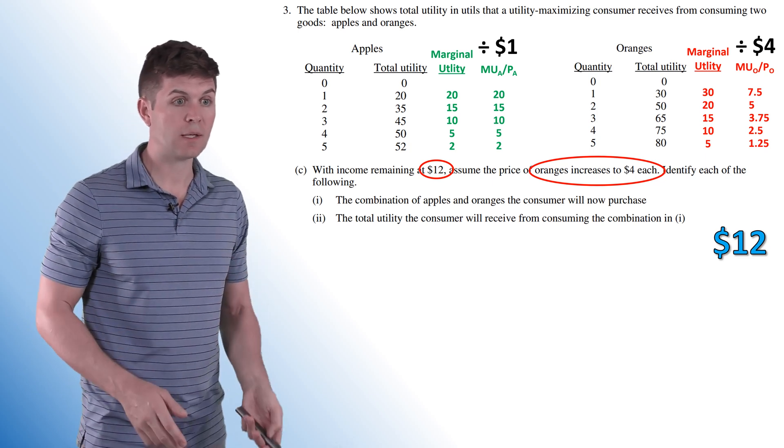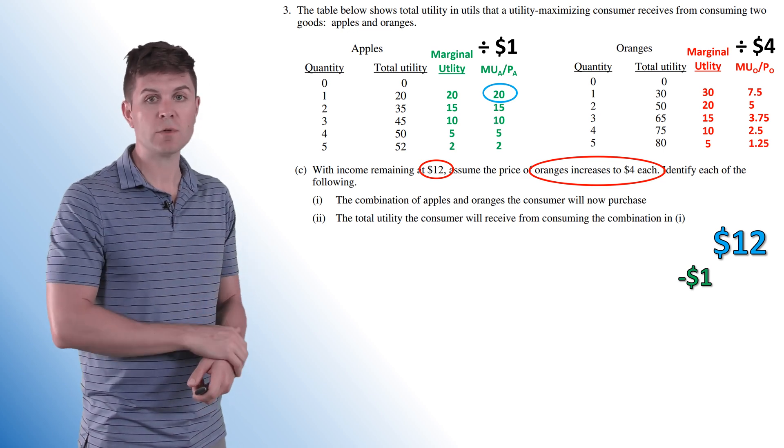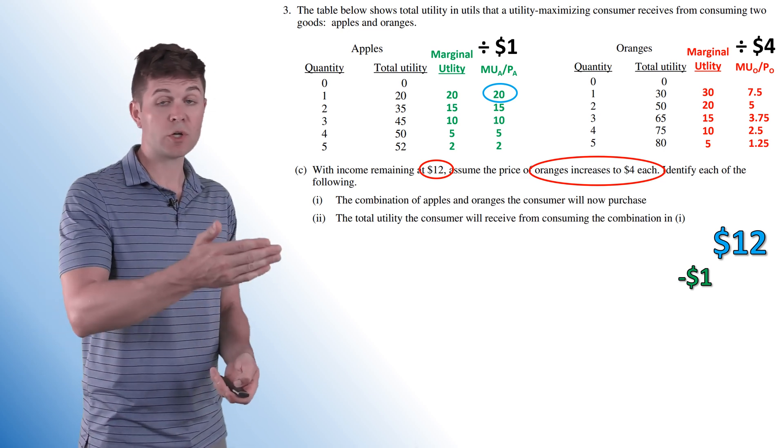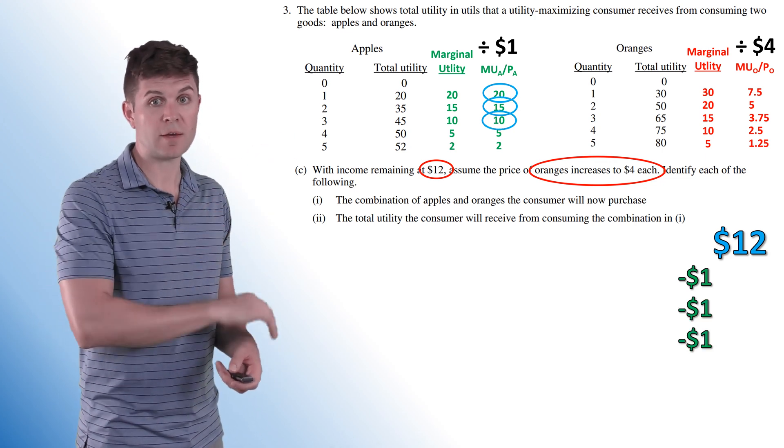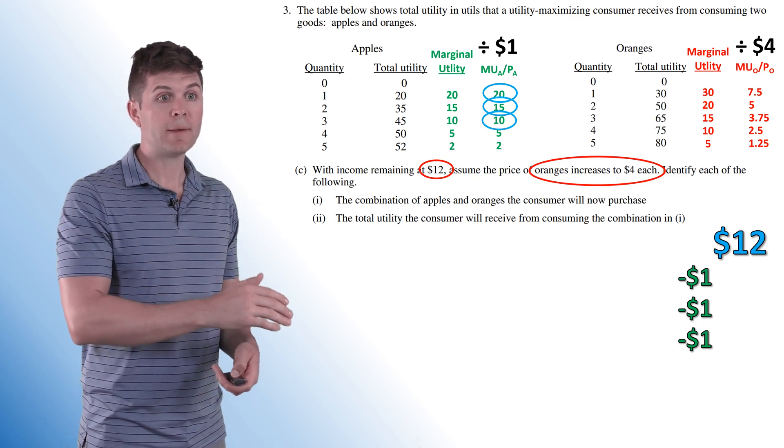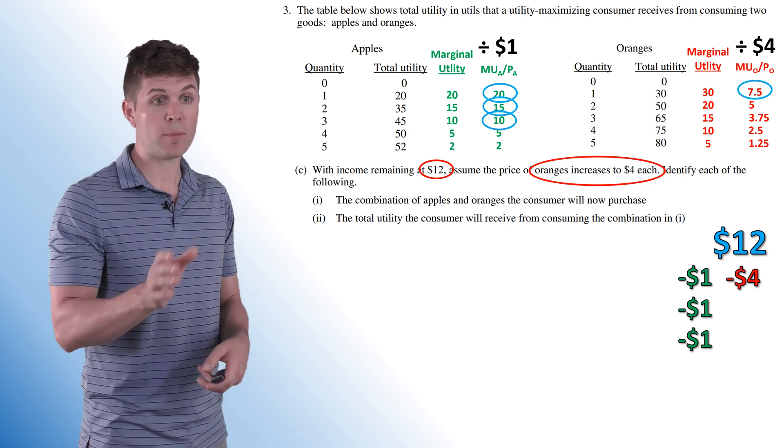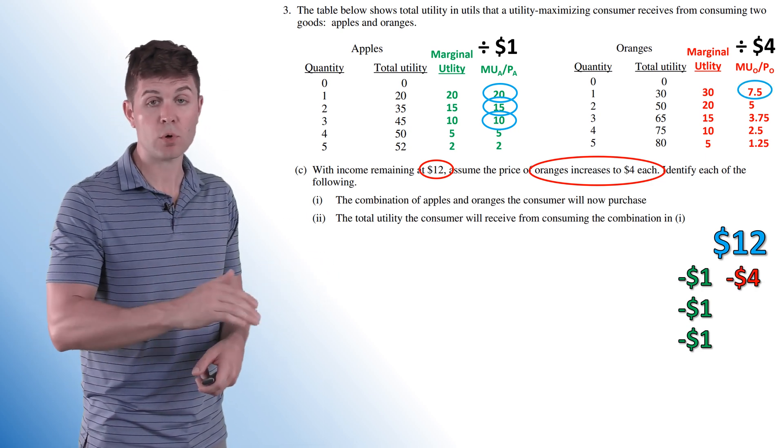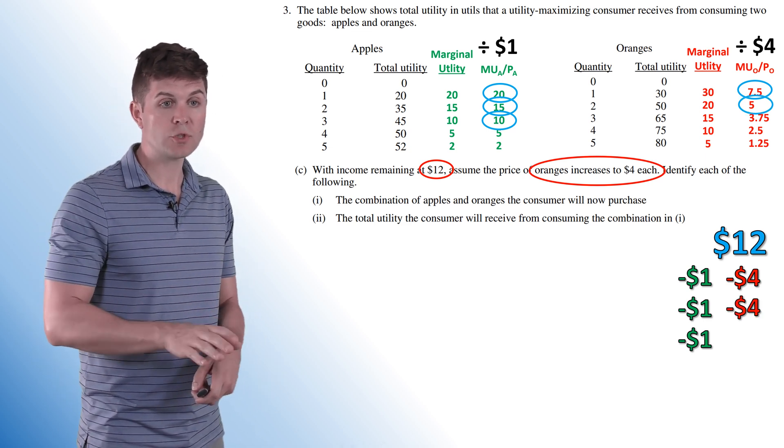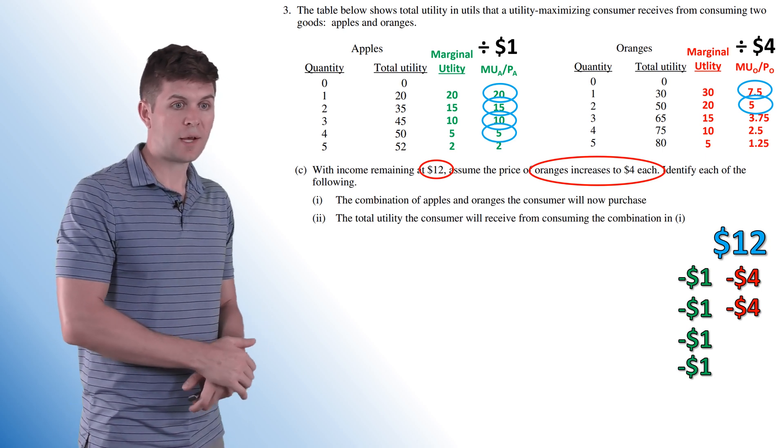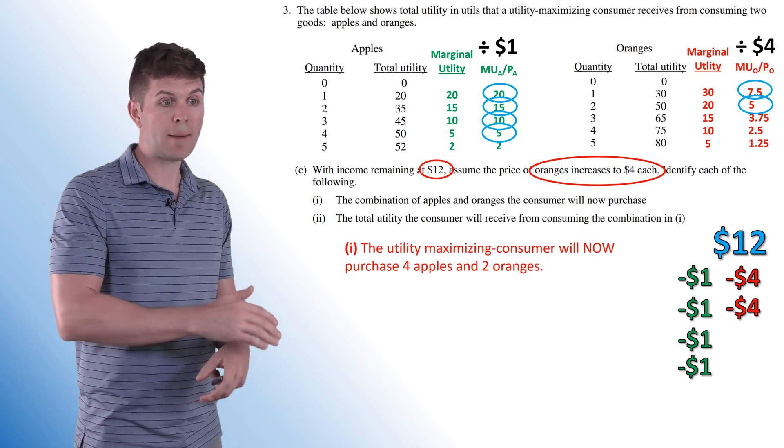So we can kind of run through the same thing. So we take our $12. The first unit we're going to buy is an apple. Gave us 20 utils of satisfaction per dollar spent. Then we're going to go buy another apple and another apple because we're not even coming close to that 7.5 until we've bought three apples. Now that we've bought three apples, the next one is five. So the orange is a better deal. We're going to drop four bucks on this orange. It's going to get us seven and a half utils per dollar spent. So now five and five apples and oranges. We'll buy another orange, and then we're going to jump back over to apples. So at this point, we've spent all $12. We've now purchased four apples and two oranges.